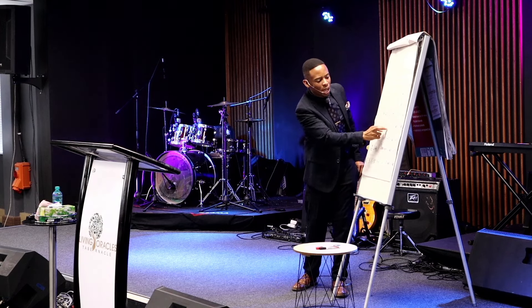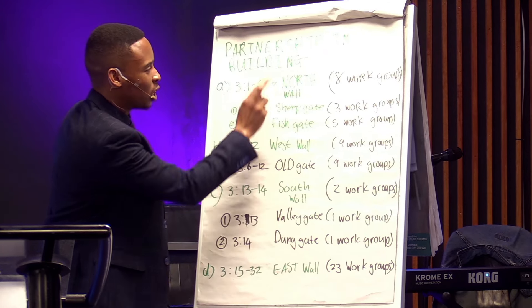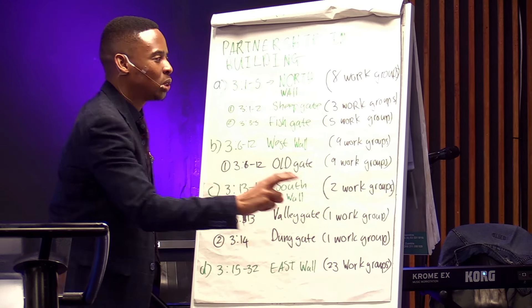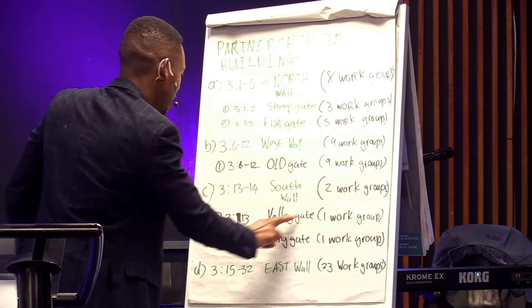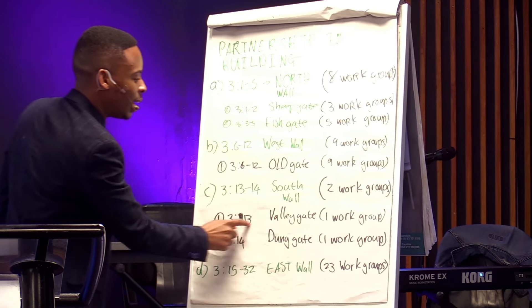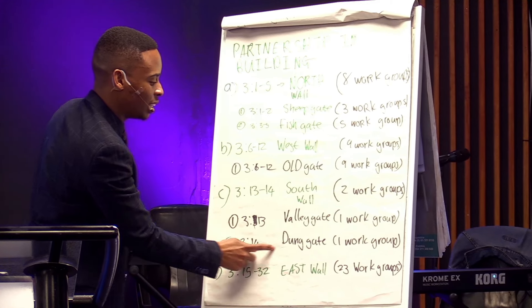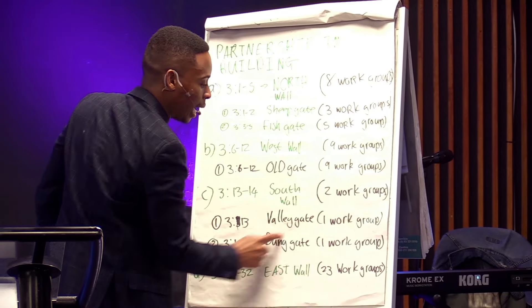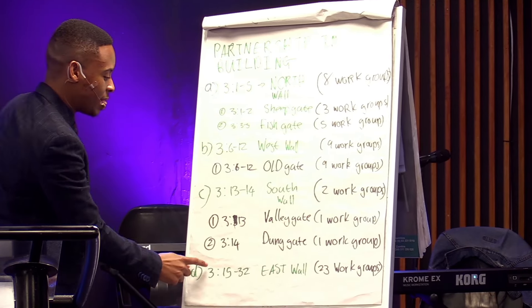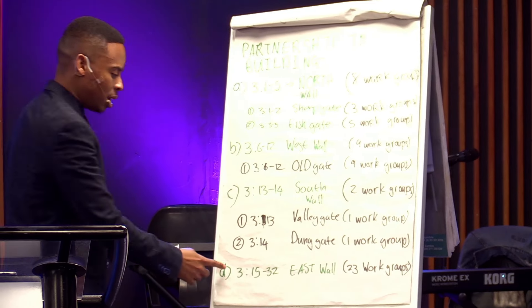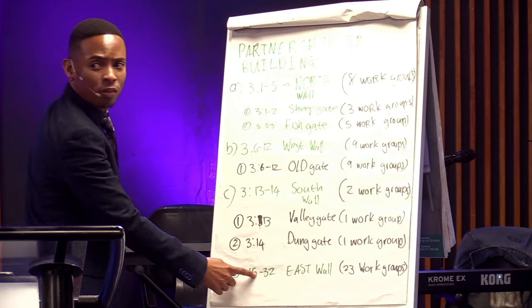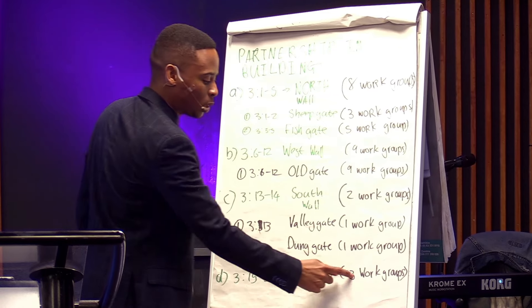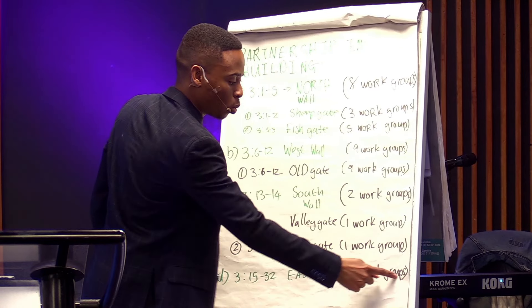In chapter 3 from verse 13 to 14 we have the south wall. There is the northern wall, the western wall, and the southern wall. The south wall only had two work groups. On the southern wall there is the valley gate — verse 13 — and the dung gate. There is one work group on the valley gate and one work group on the dung gate. Then we move to the east wall — the final one — from verse 15 of Nehemiah chapter 3 to verse 32.